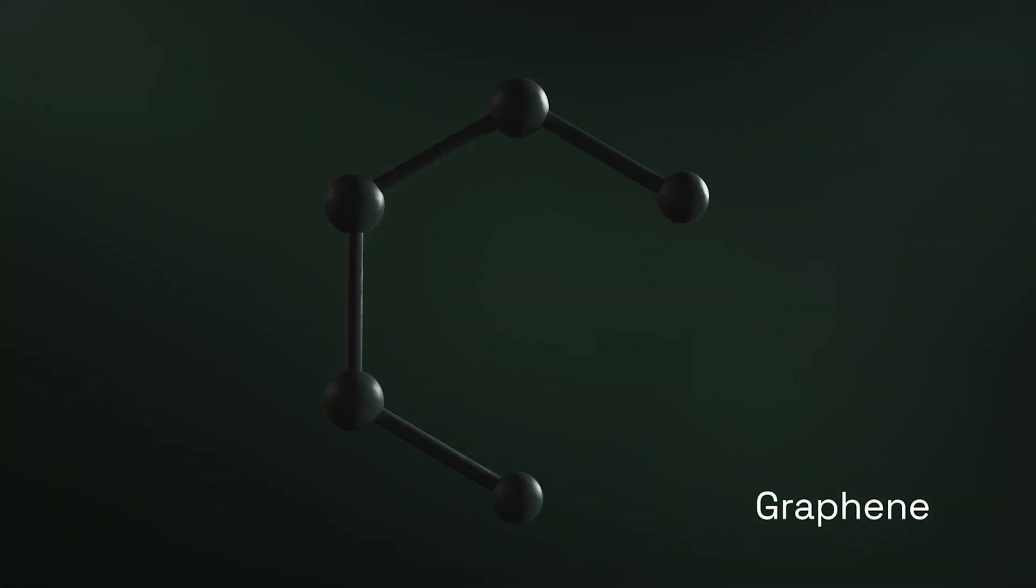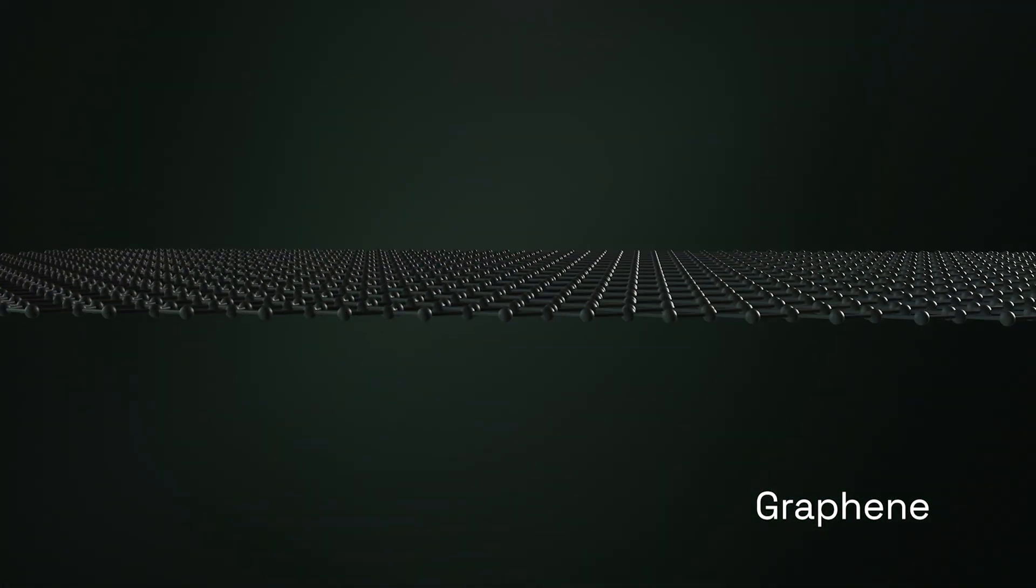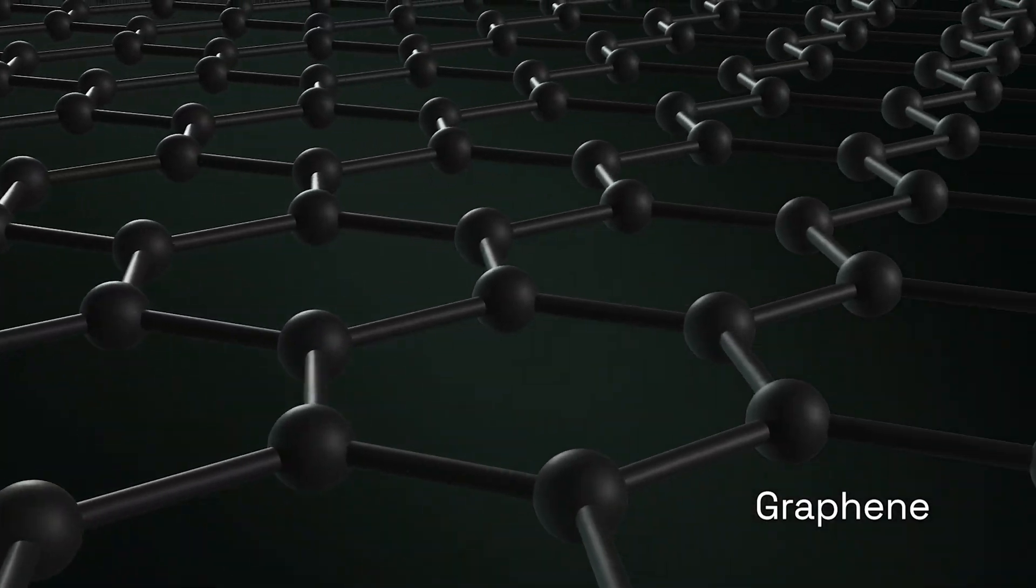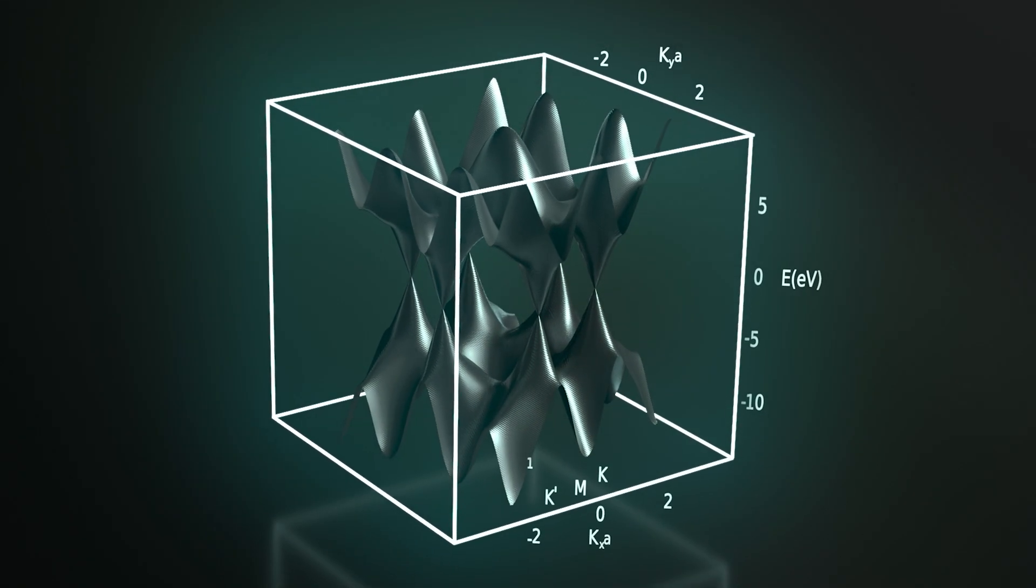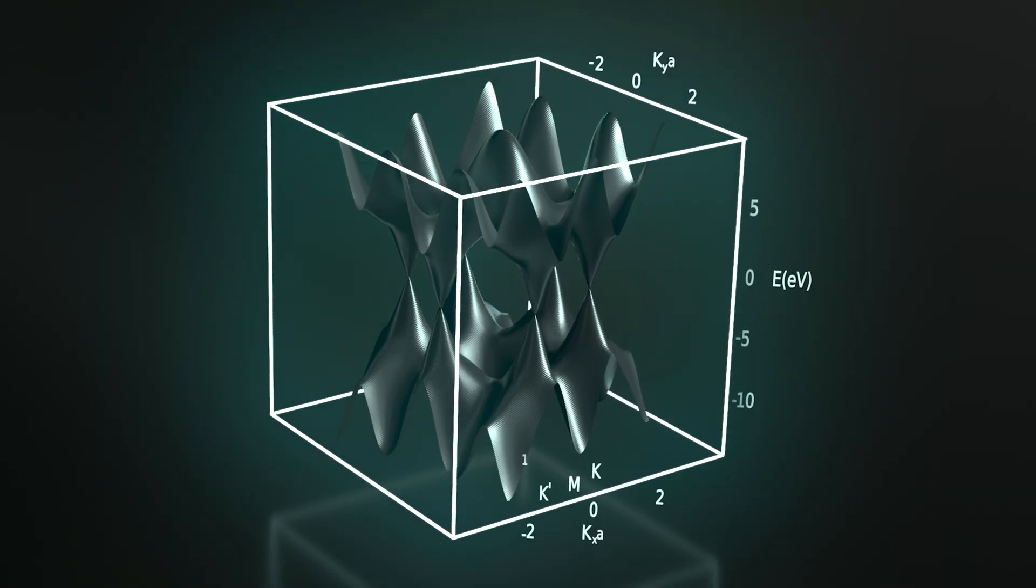Graphene is a single layer of carbon atoms arranged in a honeycomb pattern. It's incredibly thin, strong, highly conductive, and has a unique band structure, making it one of the most promising materials for optoelectronic technology.